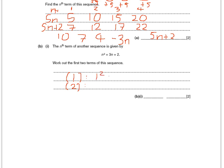So let's substitute 1 in to the sequence. So it's 1 squared plus 3 times 1 plus 2. 1 squared is 1, add 3 is 4, add 2 is 6. The first term is 6.